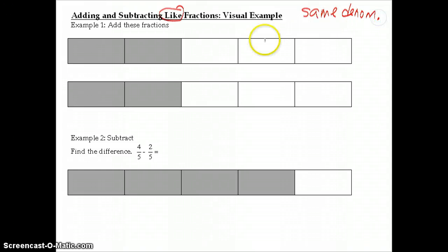Okay, so for example, if we want to add these two fractions, this fraction here, we see we have two parts shaded out of a total of five, so this is two-fifths.